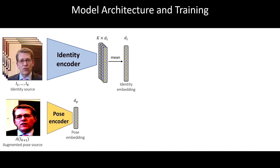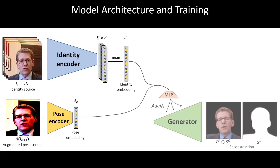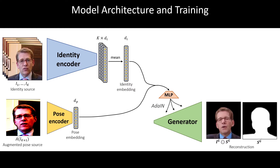In our experiments, we use the MobileNet V2 architecture. We train our generator to reproduce the foreground of the last frame and its segmentation mask. The generator is conditioned on both the identity embedding and the pose embedding through adaptive instance normalization blocks, similarly to the StyleGAN architecture.